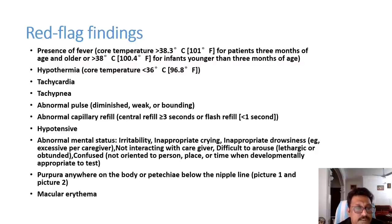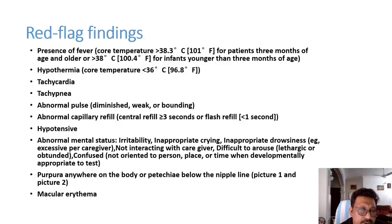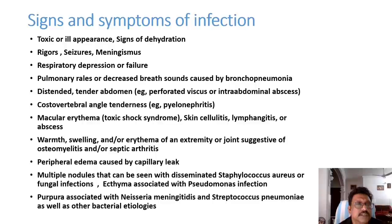Altered mental status occurs whenever there is hypotension or toxemia, causing reduced GCS — that is a bad sign. Purpura mainly occurs in bleeding and platelet disorders. Macular erythema is also a red flag. These are the important red flags to recognize in sepsis.